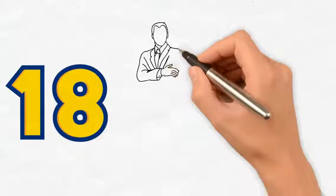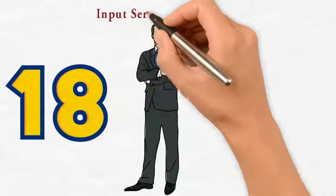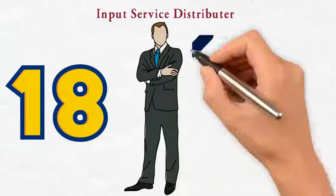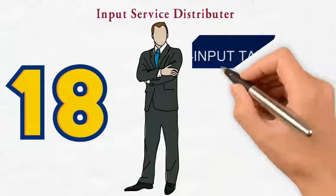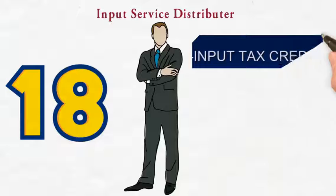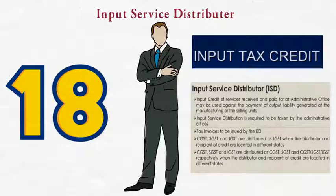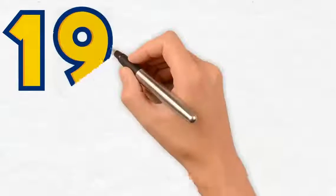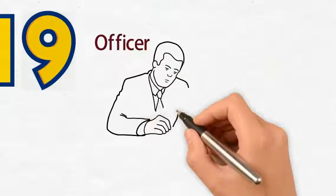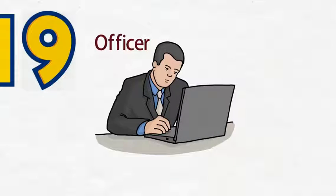18. Being an input service distributor, takes or distributes input tax credit in violation of the rules. 19. Obstructs proper officer during his duty.